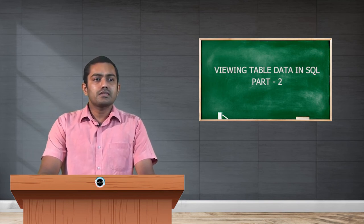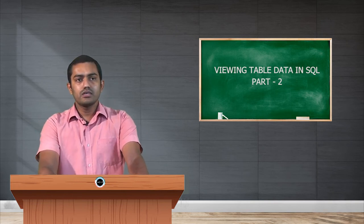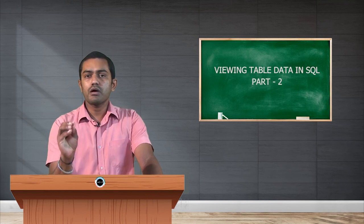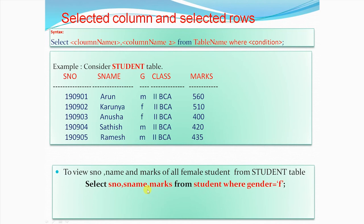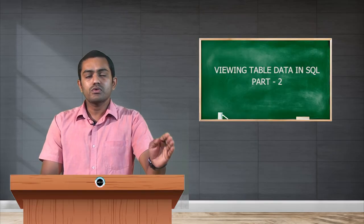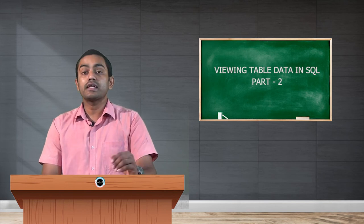Now we concentrate on the third category: selected rows and selected columns. Here we focus on some columns as well as some rows. The syntax is: SELECT column_name1, column_name2 FROM table_name WHERE condition. For example, as a lecturer wanting to view student number, student name, and marks scored by female students — those are the selected columns and female is the row condition.